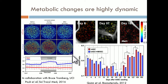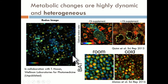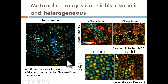Destructive techniques such as mass spec and carbon labeling are not well suited to characterize this type of dynamic change. Metabolic changes are also highly heterogeneous, and we're starting to understand this heterogeneity more and more — including understanding its impact on our inability to treat diseases such as cancer.